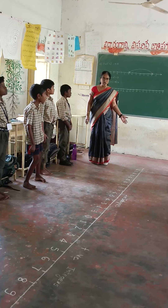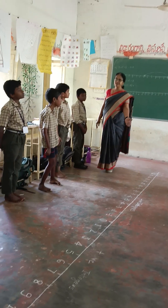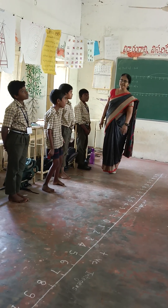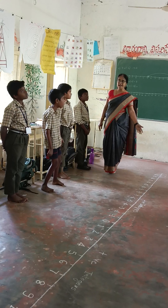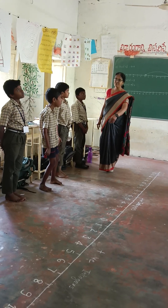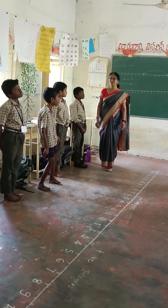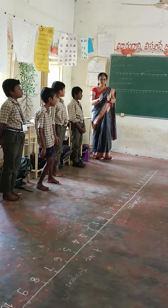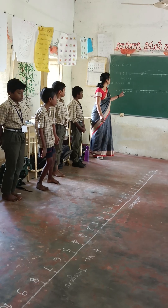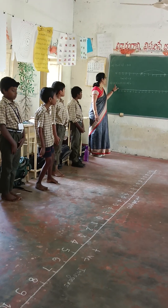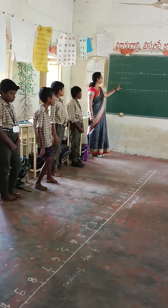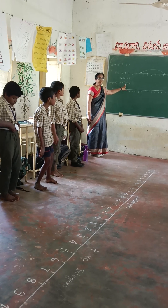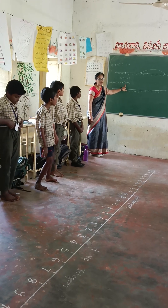Yesterday we learnt how to add numbers on a number line — how to add integers on a number line. Now the question is minus 2 plus 8 plus minus 4.